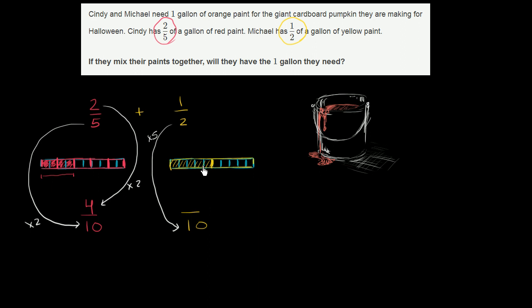So similarly, that one shaded in section in yellow is going to turn into 5. That one-half is going to turn into five-tenths. So we're going to multiply by 5. Another way to think about it, whatever we did to the denominator, we have to do to the numerator.